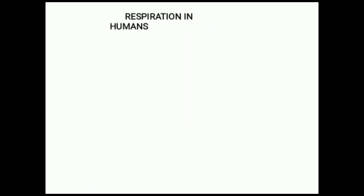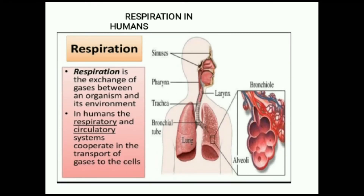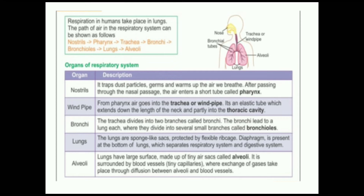Now the next topic is respiration in humans. Respiration is the exchange of gases between an organism and its environment. In humans, the respiratory and circulatory systems cooperate in the transport of gases to the cells. Now see the diagram showing the organs of the respiratory system. Respiration in humans takes place in the lungs.